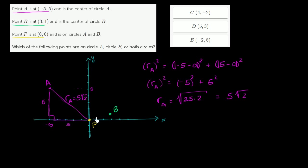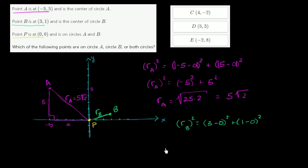Now let's figure out the radius of circle B. Same exact idea. The radius of circle B squared is equal to our change in x: 3 minus 0 squared, plus 1 minus 0 squared. So the radius equals the square root of 3 squared plus 1 squared, which is 9 plus 1, which is the square root of 10. The radius of circle B is the square root of 10.